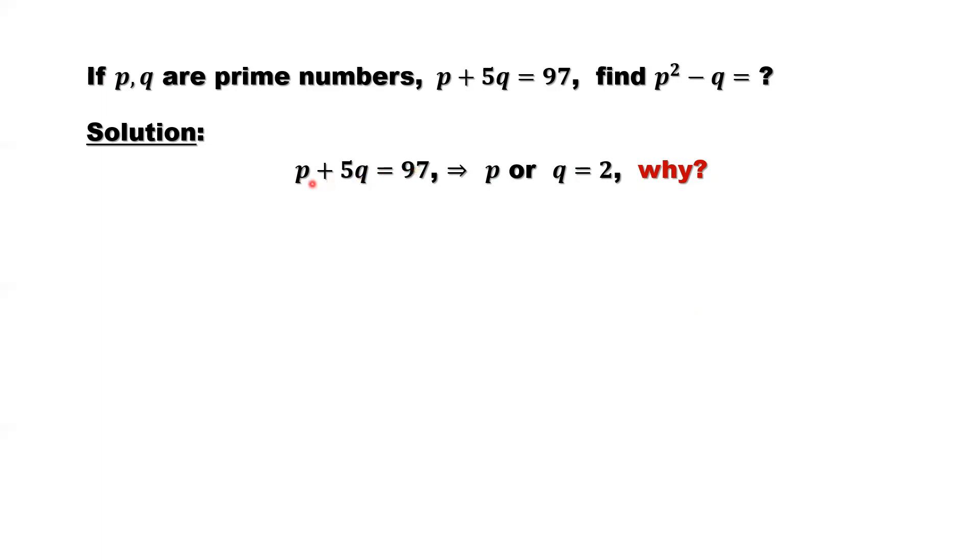Impossible. If this is an odd number, this is an odd number. 5 times odd number is odd number. Odd number plus odd number should be even number. Cannot be true. That means q and p, only one can be even number.